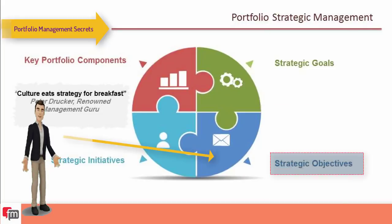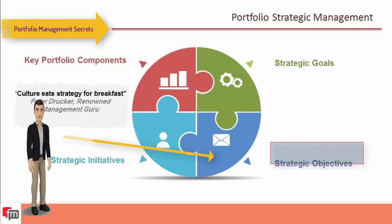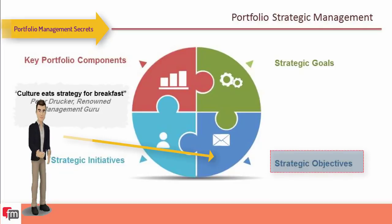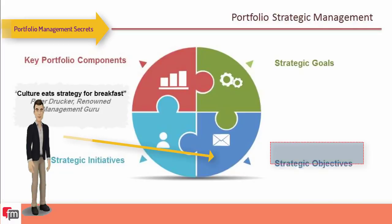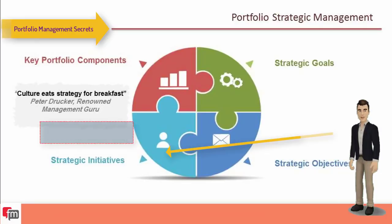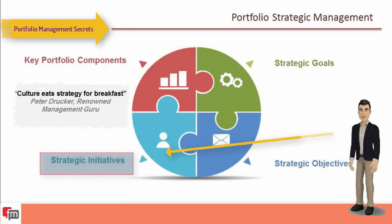Where the vision describes the goal, a strategy is the choice of how to reach that goal. Strategic objectives can be categorized into areas such as profitability, financial resources, market position, legal or regulatory compliance, confidence, innovation, productivity, physical resources, human resources, social responsibility, value creation, and customer satisfaction.